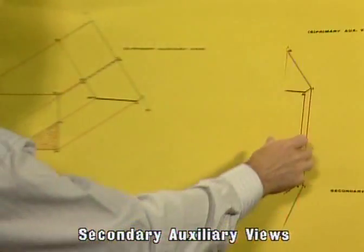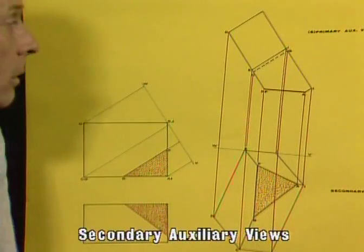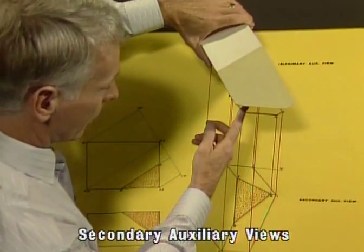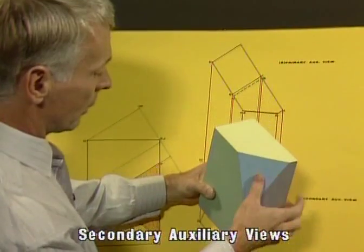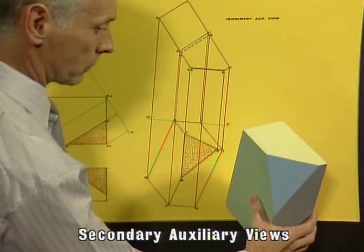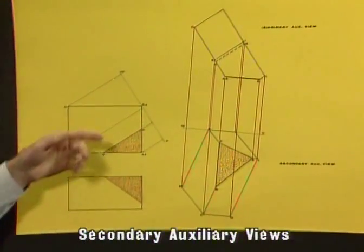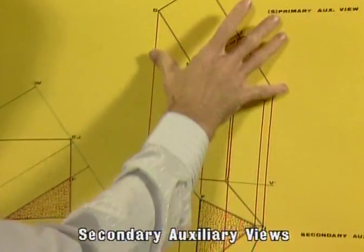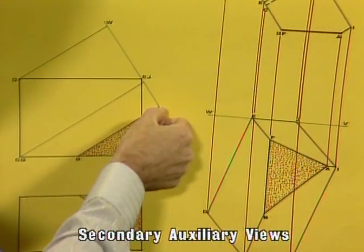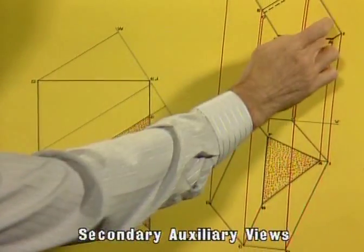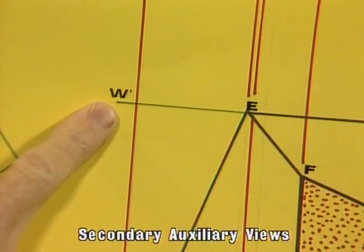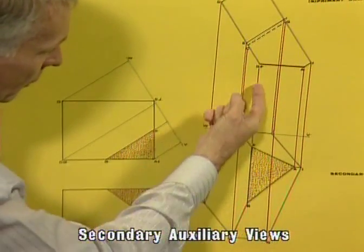The next stage is to rotate from that view — to rotate the object round 90 degrees so this face now becomes parallel with the picture plane. To do that, we've drawn lines that are perpendicular to the line BF, brought those down, and drawn a reference plane WV which is perpendicular to the line BF that we projected this view from. We then, using dividers, step off these distances from this reference plane W-bar V-bar, which is perpendicular to these projection lines.